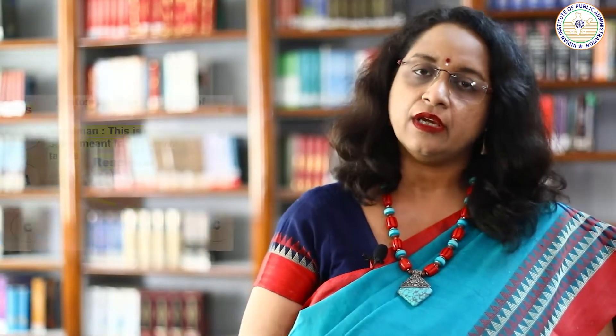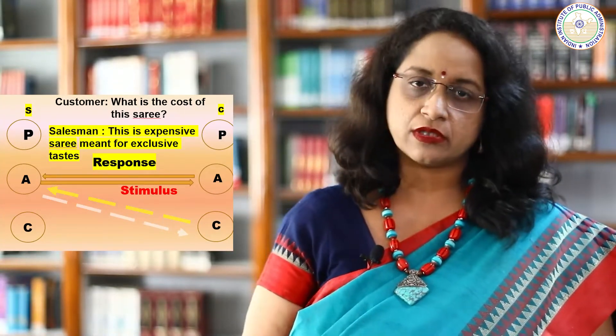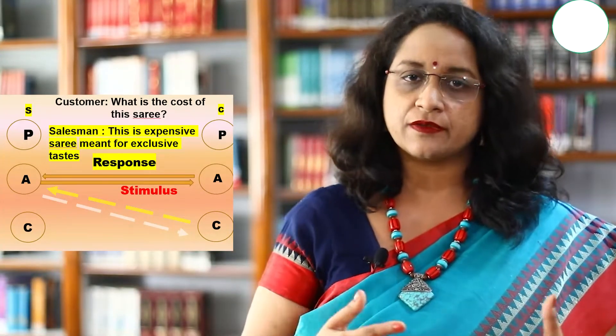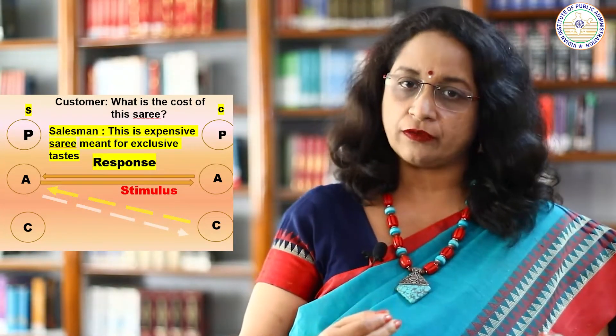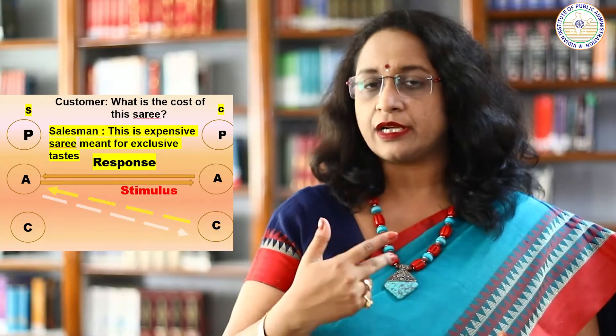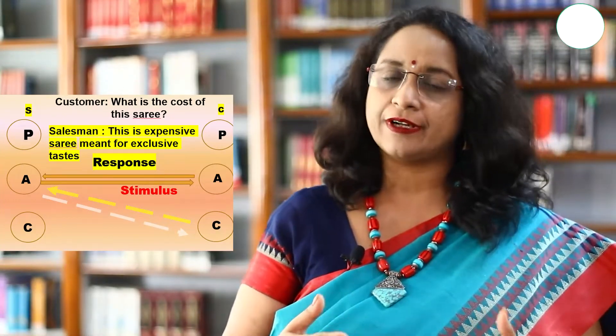Ulterior transactions are more complex and have a hidden agenda. They cause much damage to interpersonal relationships because they have double meaning. Ulterior transactions involve at least two ego states on the part of the first person — the individual may say one thing but mean something quite different. For example, if a lady asks a salesperson how much does this saree cost, the salesperson answers this is a very expensive saree exclusively meant for special tastes — implying that it's a saree she cannot afford because she does not have a special taste. The transaction has double meaning, which is why it will block further transactions. According to Eric Berne, we need to have more complementary transactions in order to facilitate good interpersonal relationships, and we need to stop cross transactions because they block communication between two people.